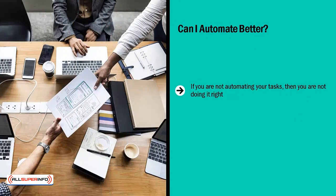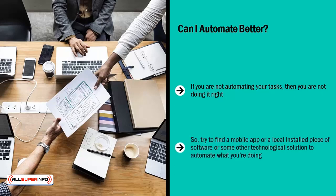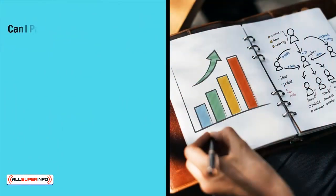I don't care what kind of work you do—there's always space for automation. So try to find a mobile app or a locally installed piece of software or some other technological solution to automate what you're doing. It can be a small part or it can be a large chunk of your daily work.